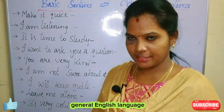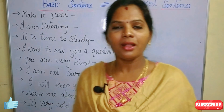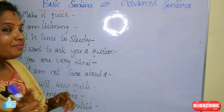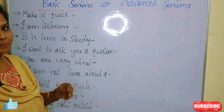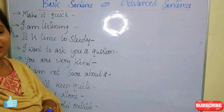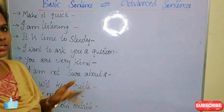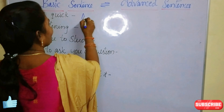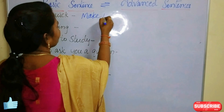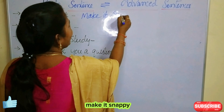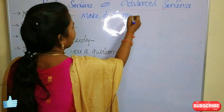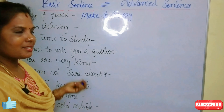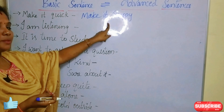So these are the few sentences I have written. Those are basic sentences and these are advanced sentences. Let us discuss one after one. First one: the basic sentence is 'Make it quick.' The advanced version is 'Make it snappy.' Make it snappy.